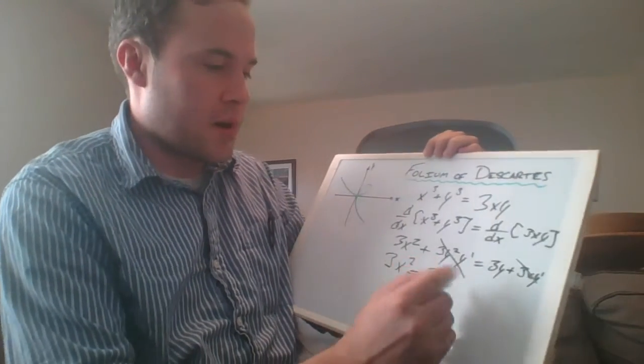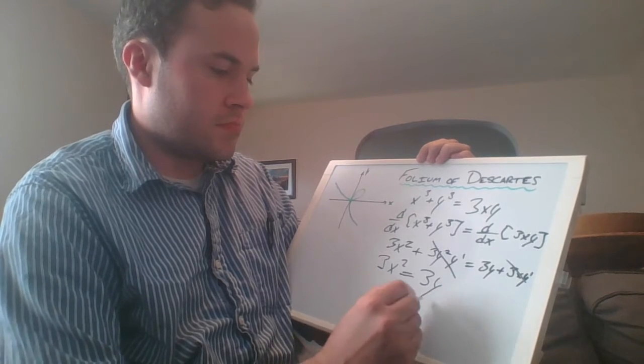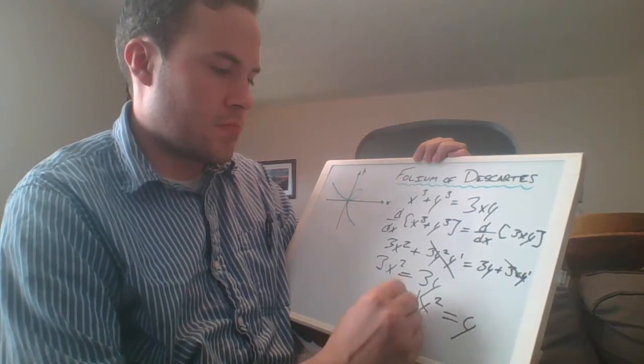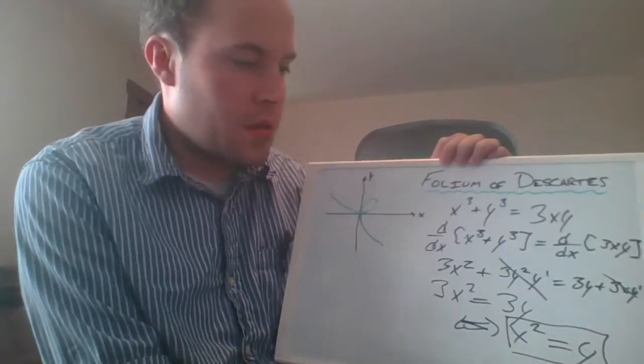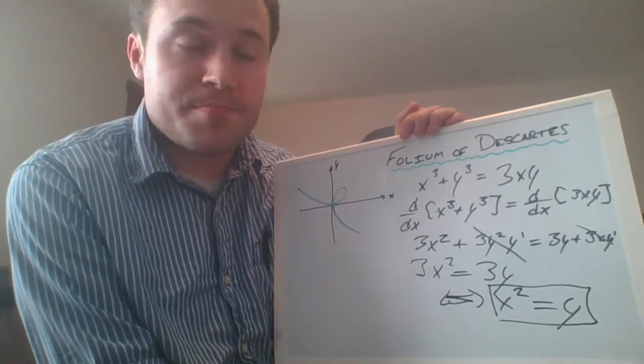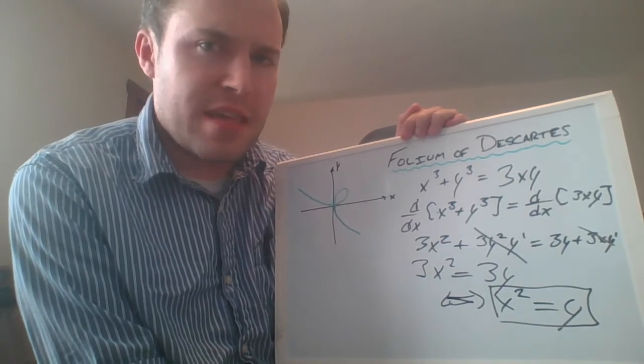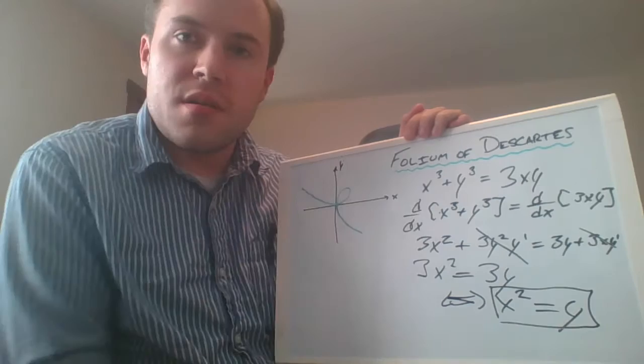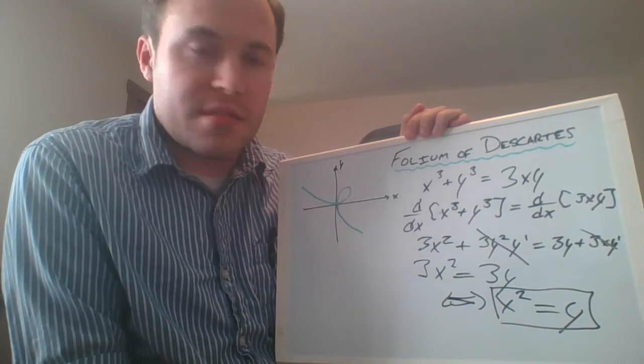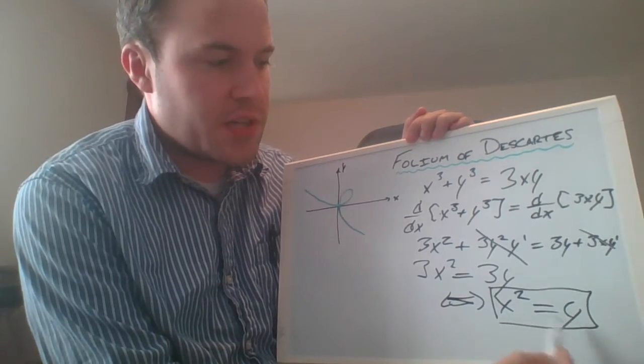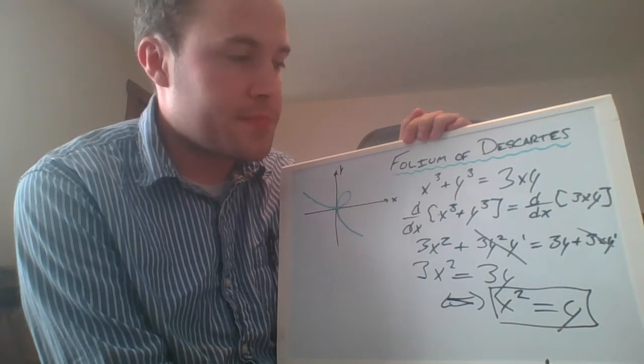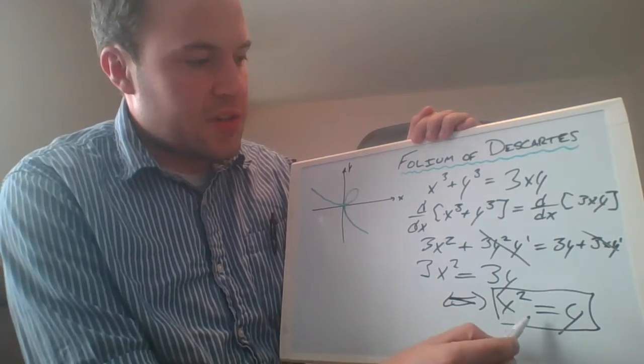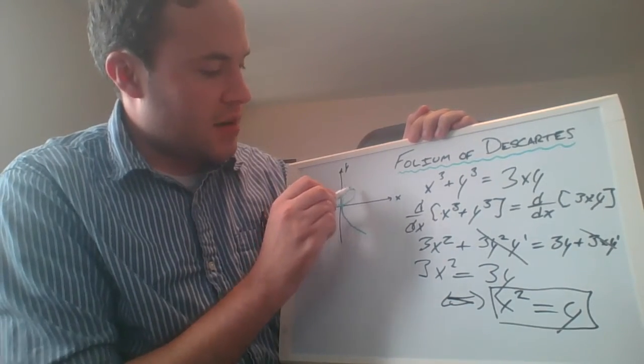In other words, y must be x squared. All right, so y has to be equal to x squared. That doesn't exactly answer the question for us because we're looking for the point on the graph where it's going to have a horizontal tangent line. This tells us just the relationship between x and y at that point.